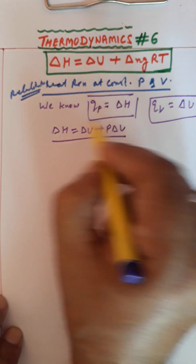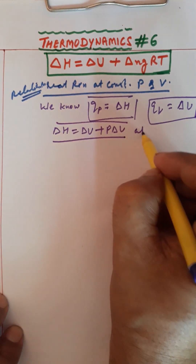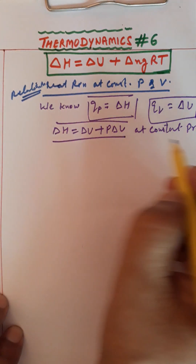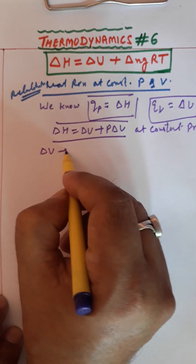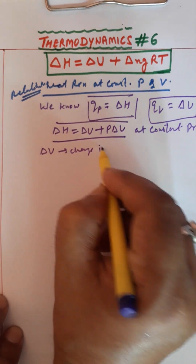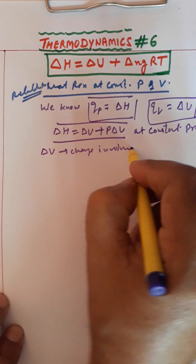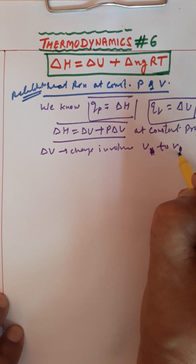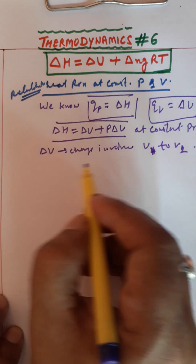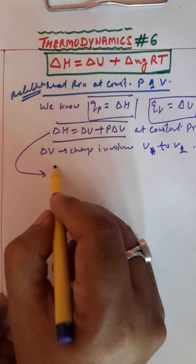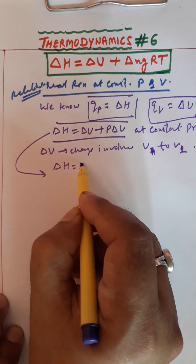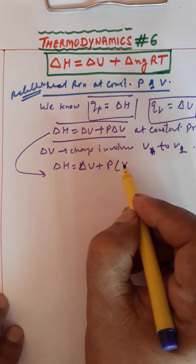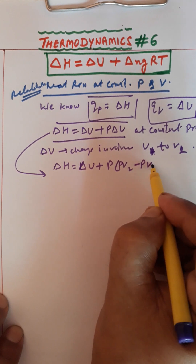At constant pressure है, तो ΔV जो है वो change in volume है। Change in volume कहां से कहां तक आएगा — V1 to V2। तो इस equation को हम लिख सकते हैं: ΔH is equal to ΔU + PΔV, अगर change है तो we can write it as PV2 minus PV1।